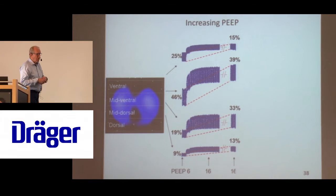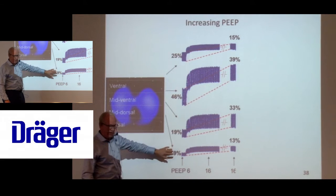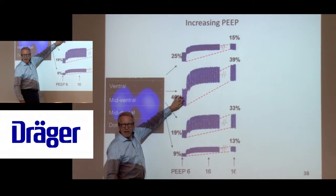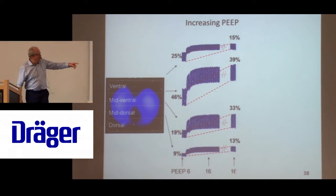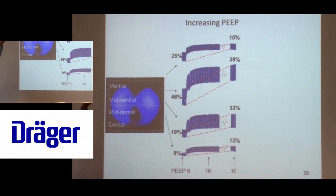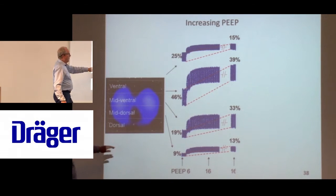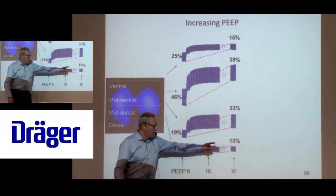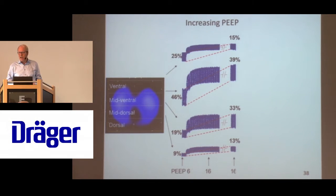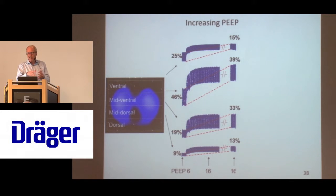Here is the ventral, mid-ventral, mid-dorsal, and dorsal EIT signal. At baseline, 9% of tidal volume goes into the dorsal, 19% into the mid-dorsal, 46% in the mid-ventral, and 25% at the most ventral part. When we increase PEEP from 6 to 16, after 20 minutes the ventral tidal volume decreases to 15%, mid-ventral goes down from 46 to 39%, mid-dorsal almost doubles, and there is also a 50% increase in the most dorsal part. So PEEP is a way of moving the tidal volume downstairs in the lung - it's the lazy doctor's prone position; it's a way of matching ventilation and circulation.